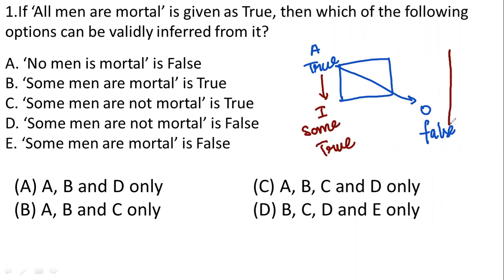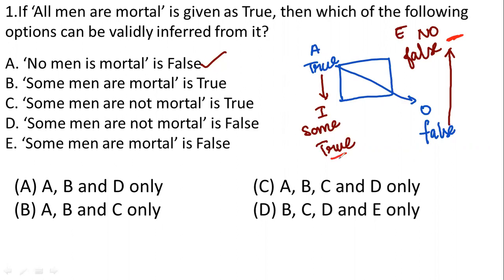False will flow upwards, which means E type or no type of statement will become false. So based on this, how do you get your answer? No man or mortal is false. So I will pick the option as my answer — true. So some man or mortal is true.